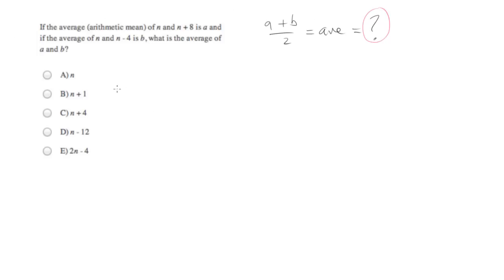Now, this is a problem that has variables in the answer choices. And whenever you see that, you always want to consider two possible routes to solve it. You want to consider plugging numbers, and you want to consider an algebraic solution.